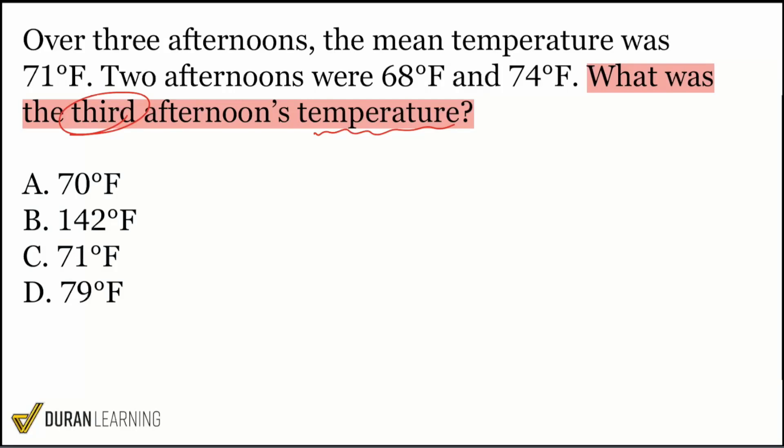So when we take a look at the information that we're given, we see that we're discussing a period of three afternoons. And it says that the mean temperature was 71 degrees Fahrenheit. So I'm going to write that down. The mean that I'm given, 71 degrees Fahrenheit. So right over there. And then I also see that for the mean, we have three values, three afternoons.